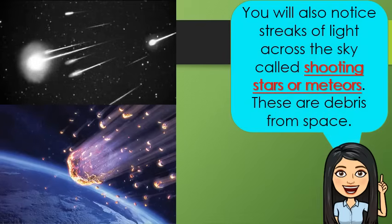You will notice streaks of light across the sky called shooting stars or meteors. These are debris from space. When they enter Earth's atmosphere at high speeds, they burn producing bright streaks of light.